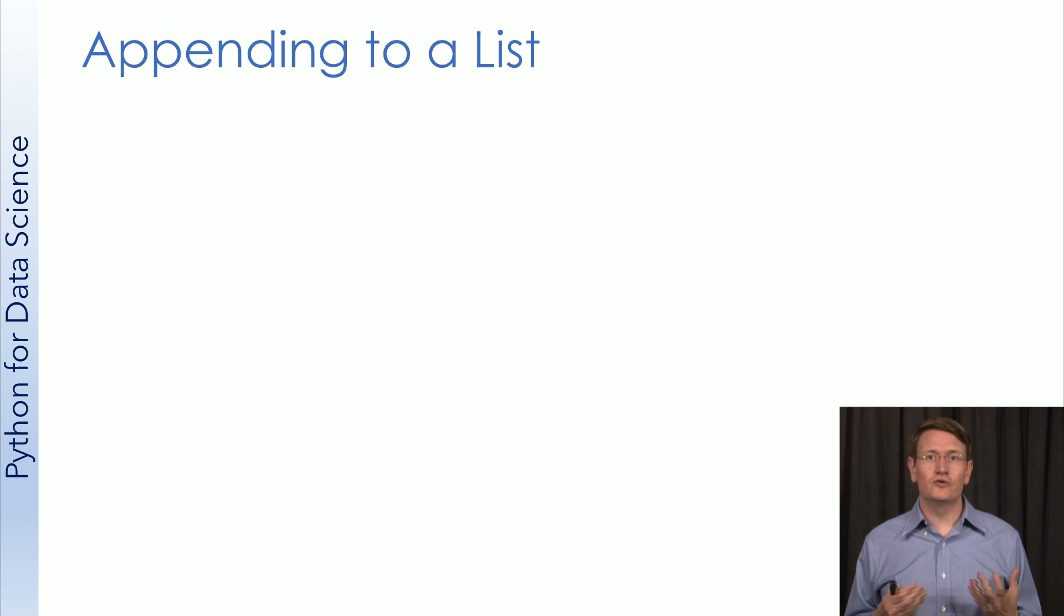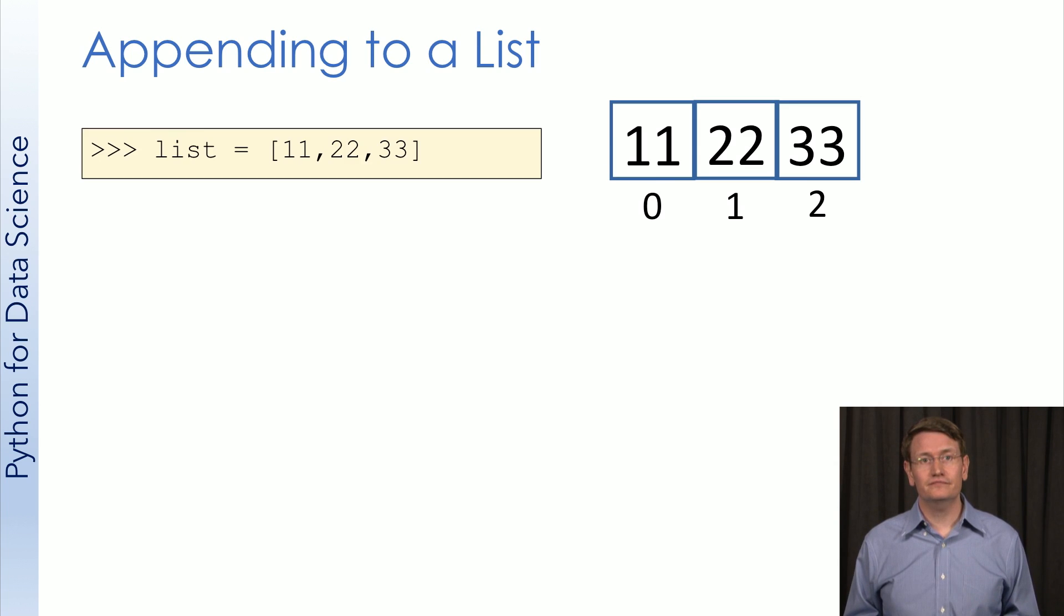I said at the start that lists are resizable. This means that we can append values to the end of the list. Let's see how this works. We'll start with our usual list. Like before, this has three elements. Using the append method, we can add an element to this list.